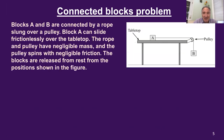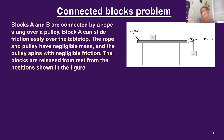Let's jump right into an example: the connected blocks problem. In this figure, the two blocks are connected by a very light rope slung over a pulley. All the usual idealizing assumptions apply — frictionless table, frictionless spinny pulley — and the blocks are going to be released from rest, with block B falling and dragging along block A.